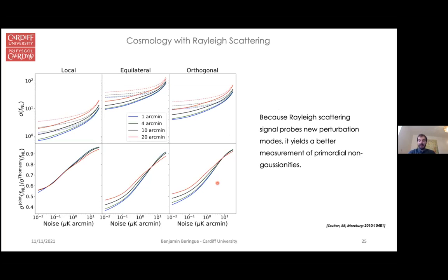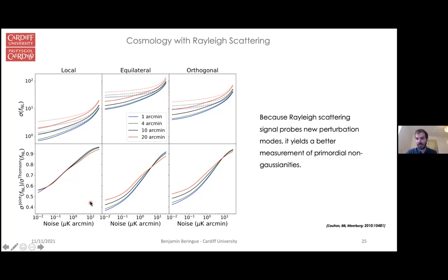Finally, in a paper led by William Coulton, we explored how Rayleigh scattering could be used to further constrain primordial non-Gaussianities. For three different bispectrum shapes — local, equilateral, and orthogonal — we find improvements of up to a factor of two or more in sigma_f_NL thanks to Rayleigh scattering, although at noise levels corresponding to very futuristic experiments. This strengthens the case for the interest in looking for Rayleigh scattering.